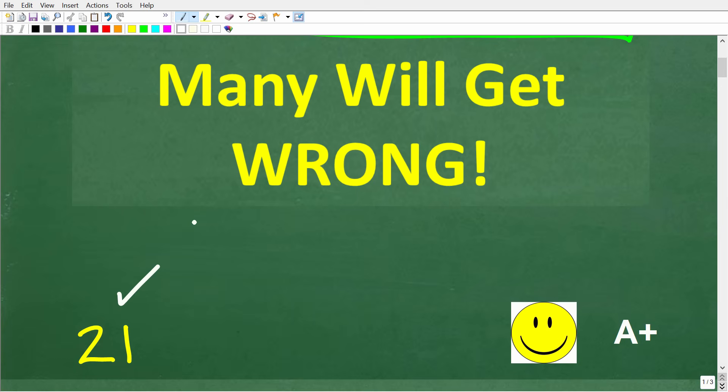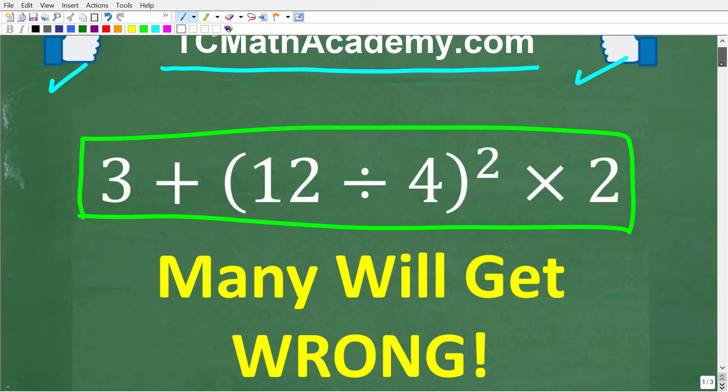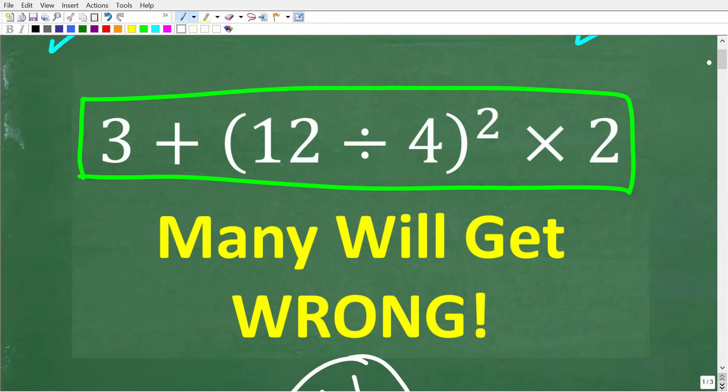Now, if you got this right, you definitely get a happy face and an A+. And if you're pretty sad because you couldn't even get a basic math problem correct, well, don't despair. Again, it's probably the case that you made an error with something called the order of operations. So let's see how to solve this problem right now.